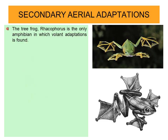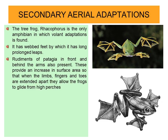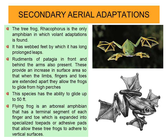The next example of secondary aerial adaptation is the tree frog belonging to class Amphibia, that is Racophorus. It is the only amphibian in which volant adaptations are found. It has webbed feet by which it makes long prolonged leaps. Rudiments of patagium in front and behind the arms are also present. When the limbs, fingers, and toes are extended apart, they allow the frog to glide from high perches — this species can glide up to 50 feet. It is an arboreal amphibian with a terminal segment of each finger and toe expanded into specialized adhesive pads, allowing it to adhere to vertical surfaces.